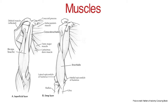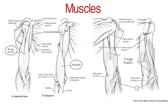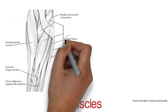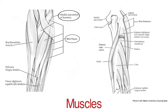Muscles responsible for flexing the elbow are the biceps brachii and brachialis. The muscles responsible for extending the elbow are the triceps brachii. The flexor muscles of the forearm attach onto the medial epicondyle of the humerus, and the extensor muscles of the forearm attach onto the lateral epicondyle of the humerus.